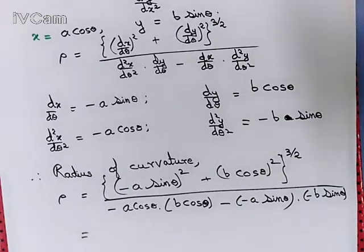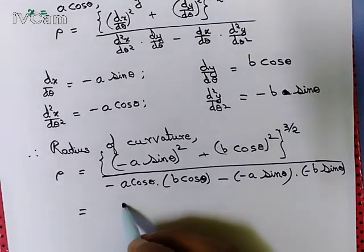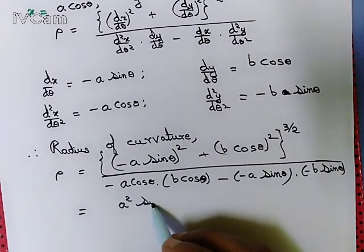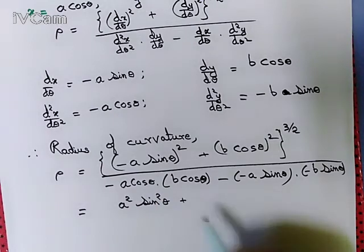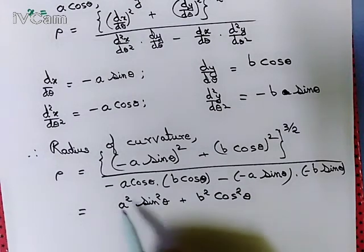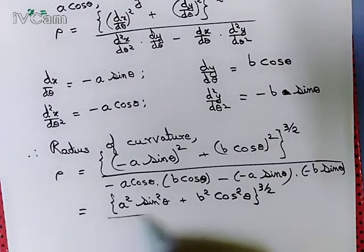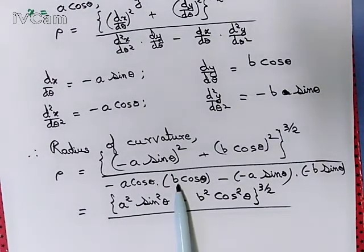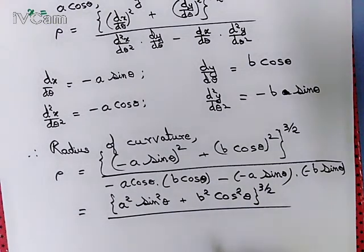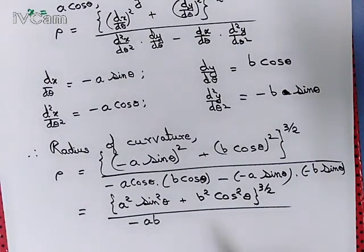Let's simplify. The numerator becomes (a²sin²θ + b²cos²θ)^(3/2). In the denominator we have −ab·cos²θ − ab·sin²θ; we can take −ab common, and cos²θ + sin²θ = 1, so the denominator simplifies to −ab.